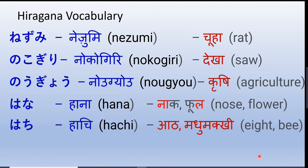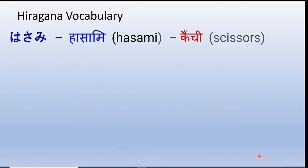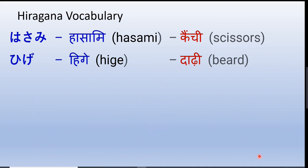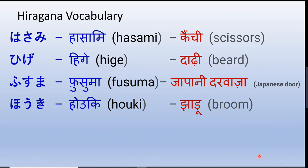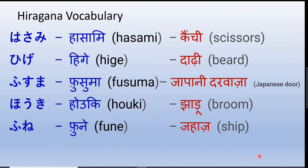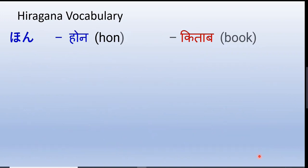Hachi — it can mean the number eight or the honey bee. Here there is no intonation difference, so both meanings share the same pronunciation: Hachi. Hitsuji — sheep. Hasami — scissors. Hige — beard. Fusuma — a special traditional Japanese door. Houki — broom. Fune — the ship. Houseki — jewels, pearls, stones; jewelry in general. Hon — book.